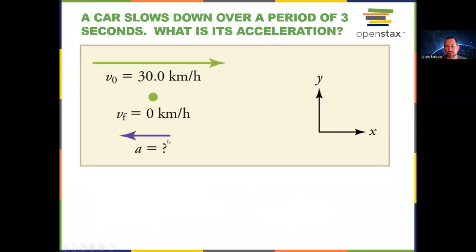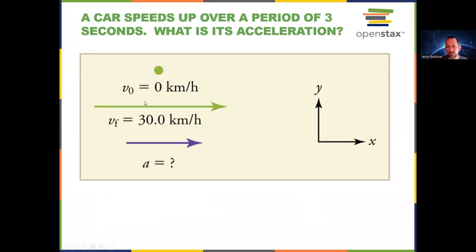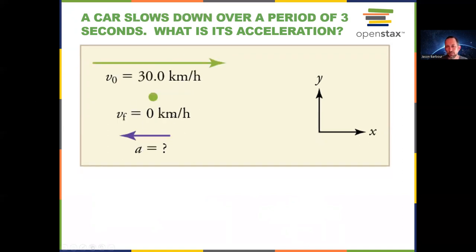Same idea for a car slowing down from 30 meters per second to a stop. Delta V equals V final minus V initial: zero minus 30 equals negative 30, divided by three seconds equals negative 10 meters per second squared. So here the acceleration is positive 10 for the first case, and negative 10 meters per second squared for the car that slows down. Acceleration can be negative.